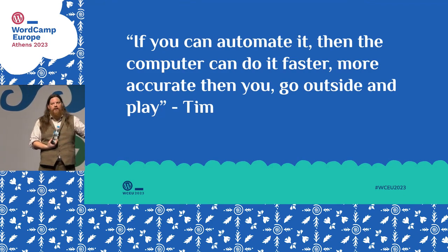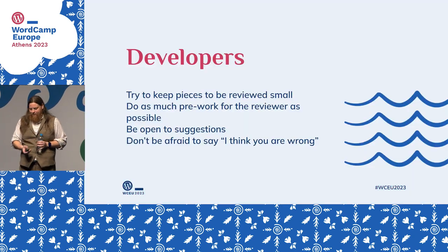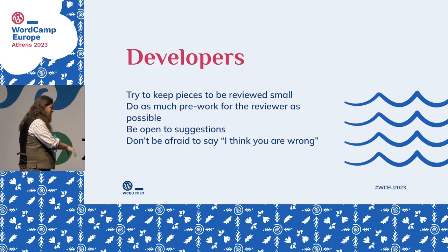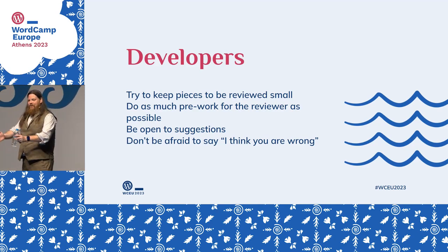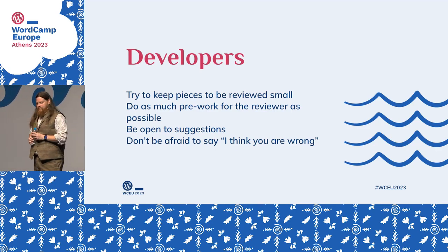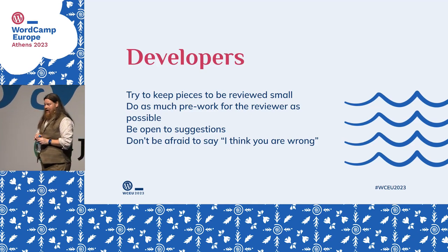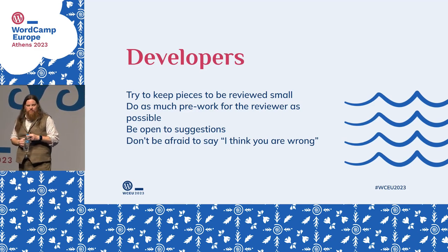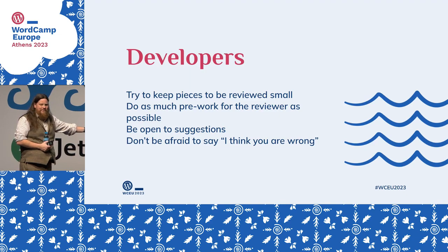As a developer, if we're going through the iterative process, keep your pieces that you want reviewed as small as possible. Remember, the goal is to get code into production — code reviews are not a barrier to production but a channel we're going to send to production. If we keep what we're reviewing small, it's going to get through quicker. Do as much pre-work for your reviewer as possible — make sure the automation tests are working, make sure it's linted, make sure it works. Don't send code that doesn't work because you didn't test it.